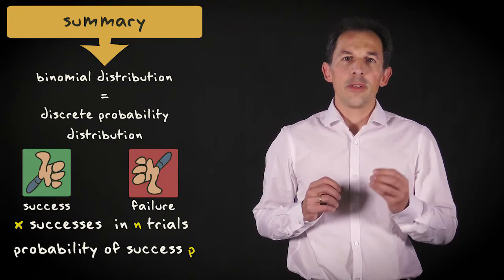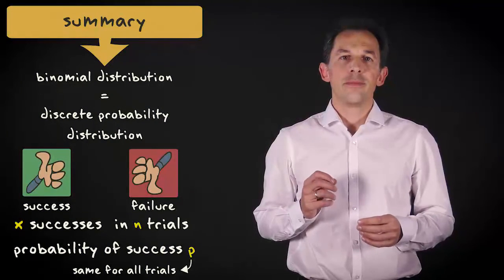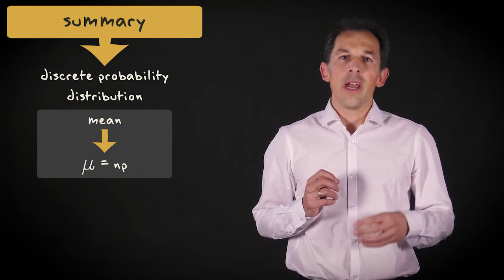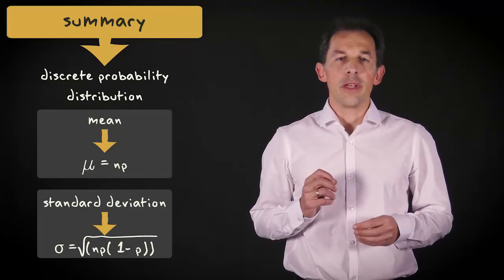The binomial distribution assumes that p is fixed for all trials. The mean of such a distribution is n times p, and its standard deviation is the square root of n times p times 1 minus p.